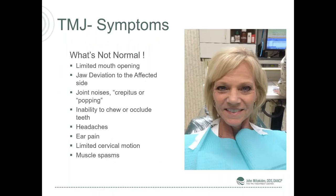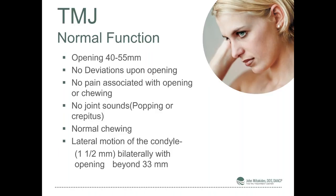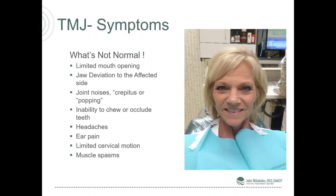What is not normal in a TMJ patient? Number one, your mouth opening is limited — you can only get your mouth open one or two fingers. When you open your mouth, the deviation we talked about is intact — your jaw will actually swing from side to side. Or you can get cracking, crunching, or grinding when you open your mouth. You find yourself having problems chewing or being able to physically put your teeth together, hitting one tooth before the rest. And you'll have headaches, which can come in about three or four different forms.